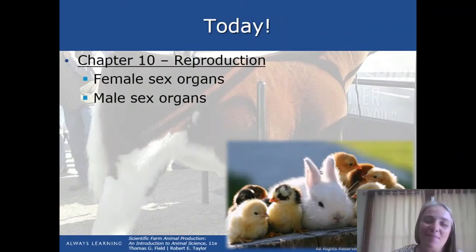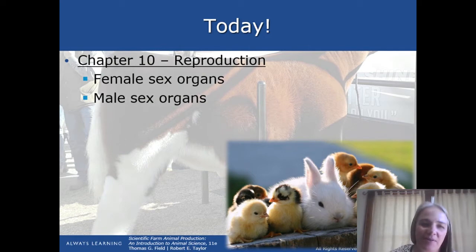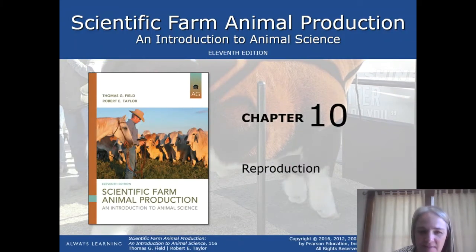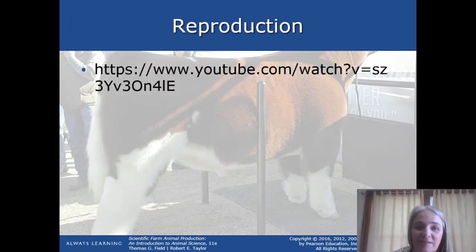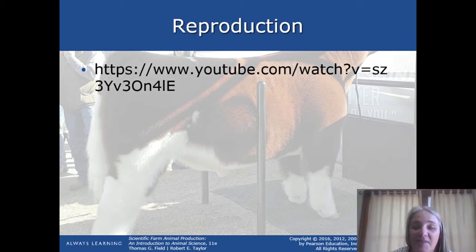Our focus today will be chapter 10 in the textbook. It covers reproduction, and we will focus on female and male sex organs. Please make sure you read chapter 10 and take notes. The human brain usually has to see information 21 times before it becomes part of your knowledge base — reading, writing, taking notes, hearing it in lecture, seeing it on a quiz. I'd also recommend watching a short YouTube video about different types of mammal pregnancies and reproduction. You're going to love it.